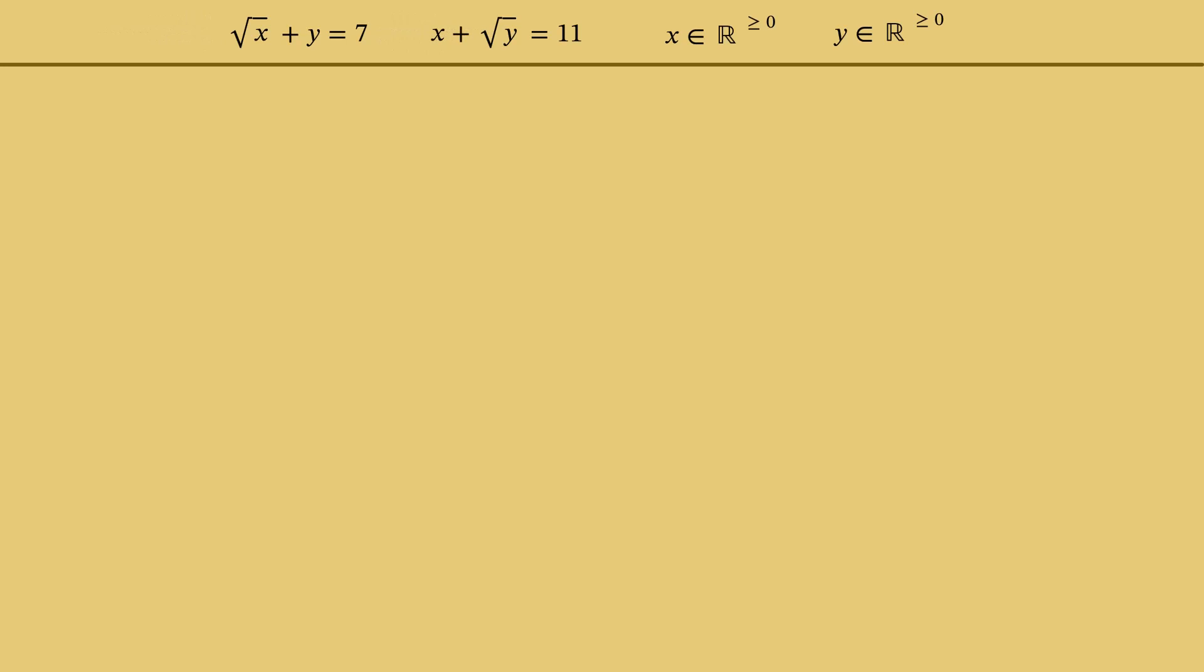The first equation of the system can be rewritten as y equals 7 minus square root of x. According to the definition of arithmetic square root, square root of x is non-negative. Therefore, y does not exceed 7. Then square root of y does not exceed square root of 7, which in turn is less than 3, as 3 squared is 9. Square root of y is non-negative and less than 3.